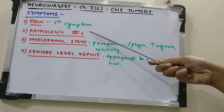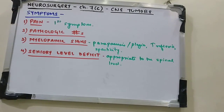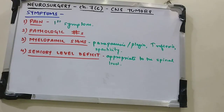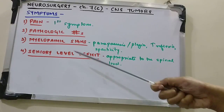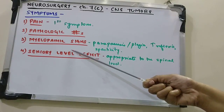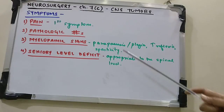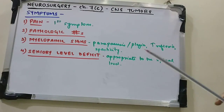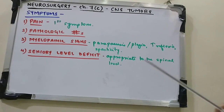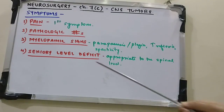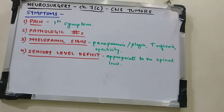Pathological fractures are also quite common with extradural spinal tumors. As the tumor enlarges and compresses the spinal cord, myelopathic signs appear, including paraparesis or paraplegia, hyperreflexia, and spasticity. On examination, a sensory level deficit appropriate to the spinal level will be found.